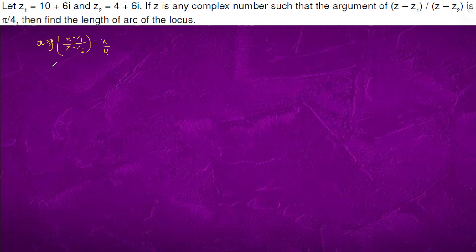We know that this could be written as (x - 10 + iota(y - 6)) divided by (x - 4 + iota(y - 6)). The argument of this equals π by 4.